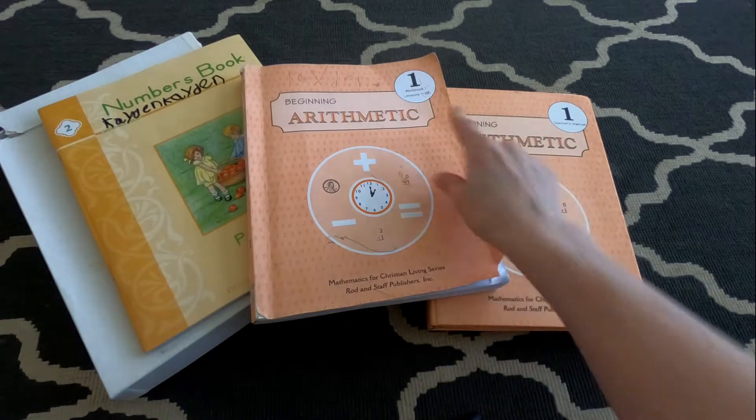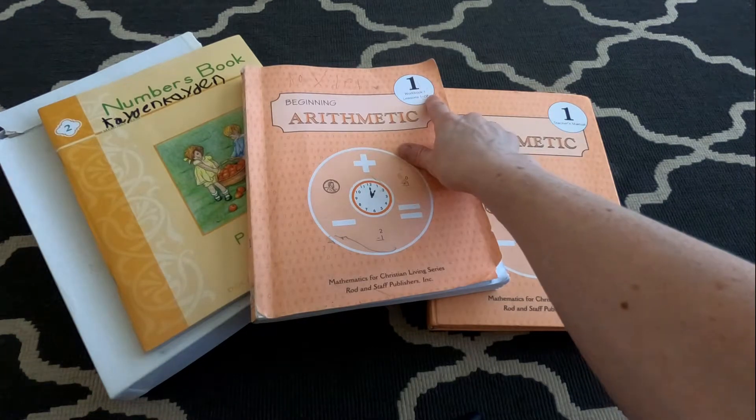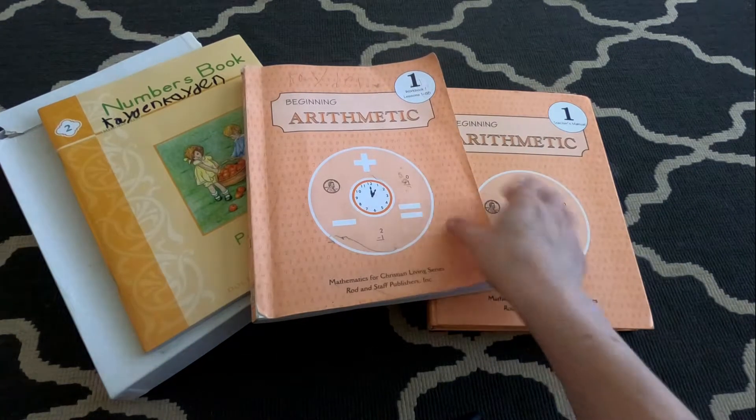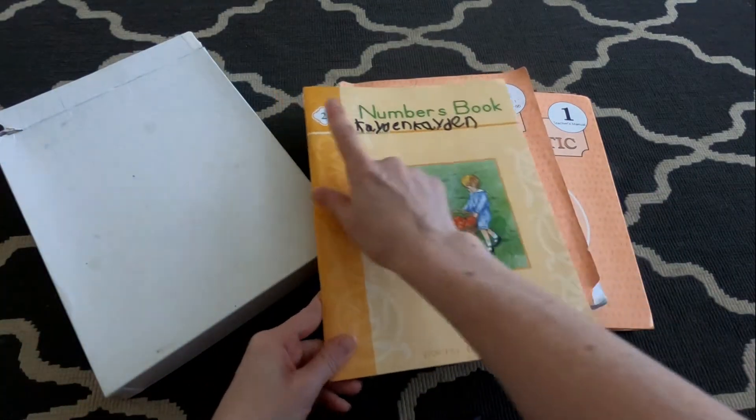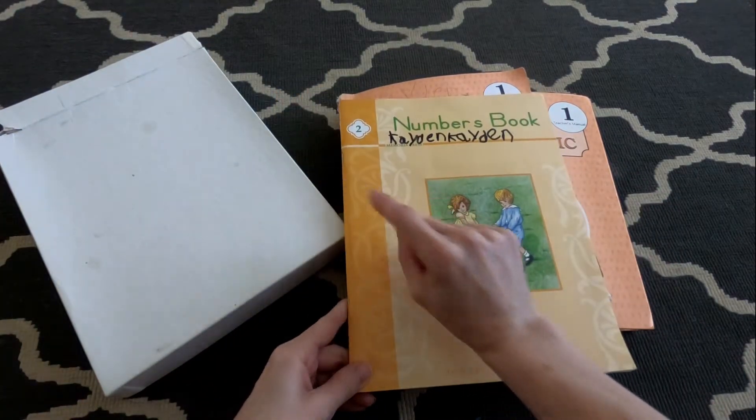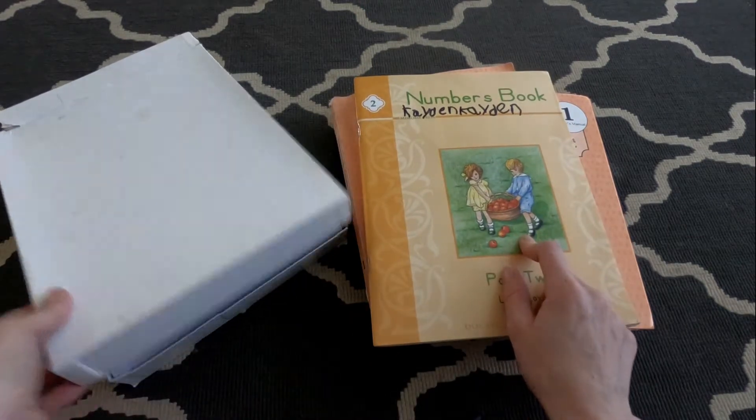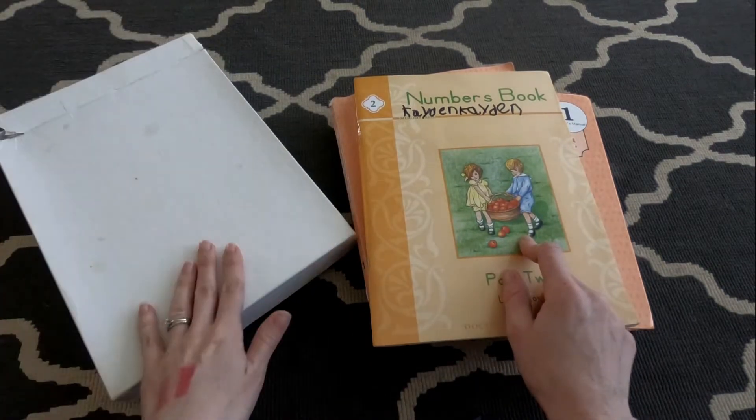The first grade comes with two workbooks, workbook one and two, but when I teach it for kindergarten, we only use workbook one and we use numbers books. This is number book two. There's also number book one put out by Memoria Press, and then we have these practice sheets which I will get to in a minute.